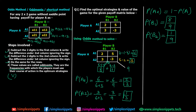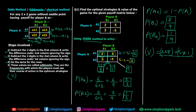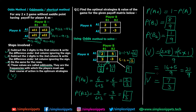The last thing left is the value of the game, which can be calculated in four different ways. Using the first method: take the first row values two and five, multiply each by its corresponding column oddment, and divide by the total. So V equals (2×8 + 5×1) divided by 9, which is 16 plus 5 over 9, giving 21 over 9, which simplifies to seven-thirds.